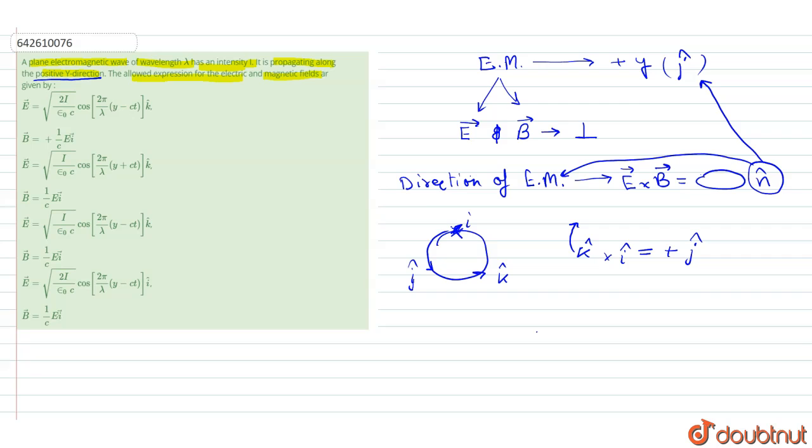K cap will be the direction of electric field and i cap will be the direction for magnetic field. Then only it is possible to get the j cap positive for electromagnetic wave.